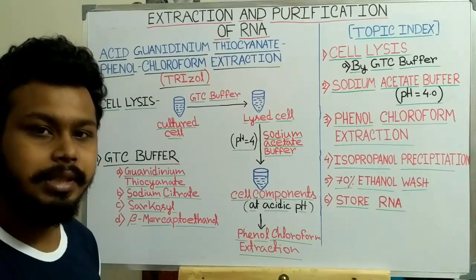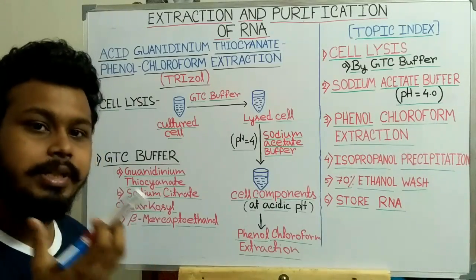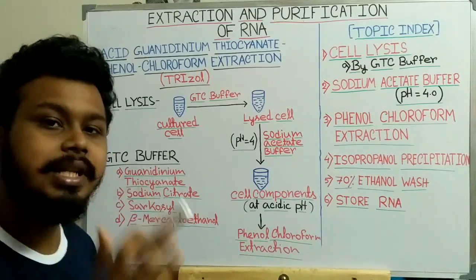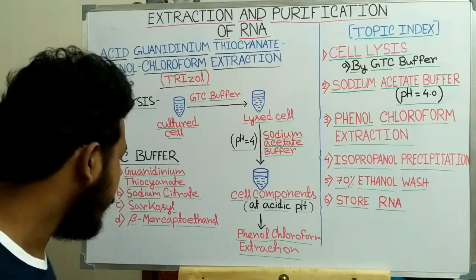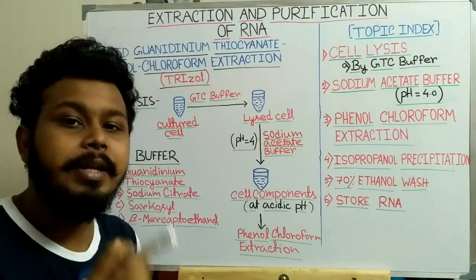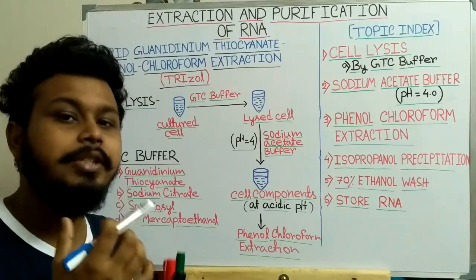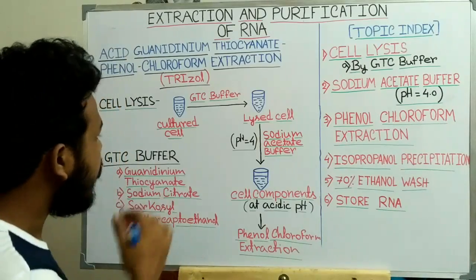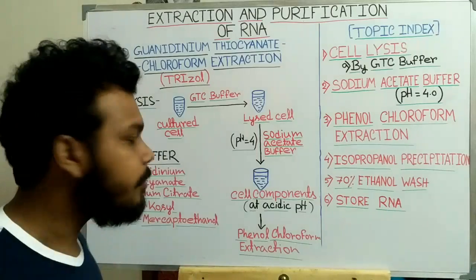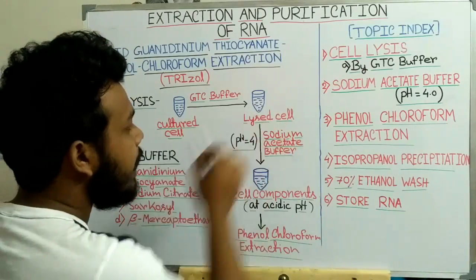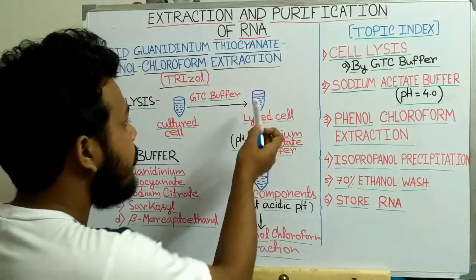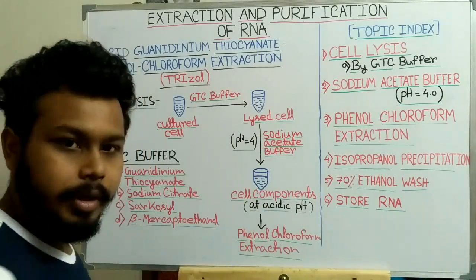Sarcosyl is a substitute detergent used as a denaturing agent which disrupts protein molecules. Beta-mercaptoethanol disrupts the disulfide bonds present on proteins. After using the GTC buffer, we get all lysed cells and all intracellular components released into the solution.